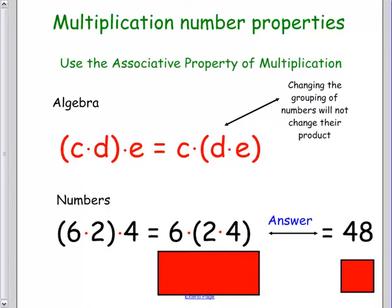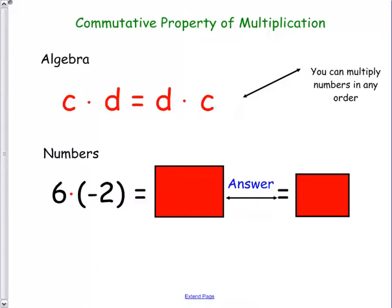Let's look at the commutative property. The commutative property, again, is all about the order. The commutative property is all about the order. So C times D would equal D times C. So down here, what would change?